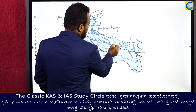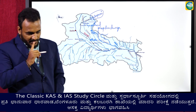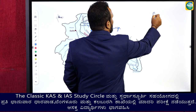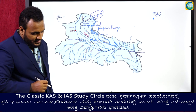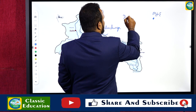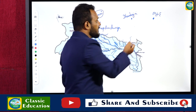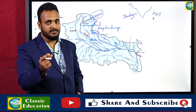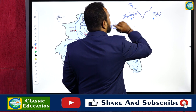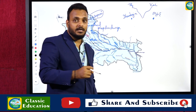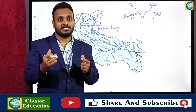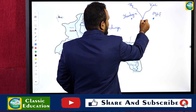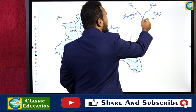Gandak river originates in Nepal, exactly between Dhaulagiri and Mount Everest in the Himadri ranges. It is created by two important streams: Trishul Gandak and Kali Gandak, formed by melting glaciers in the Himalayas.